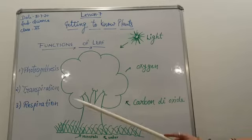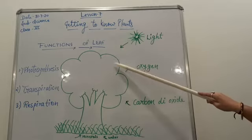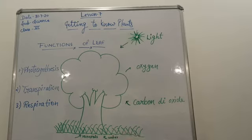The second process is transpiration. The process of loss of water from tiny pores known as stomata on the lower surface of a leaf in vapor form is called transpiration.